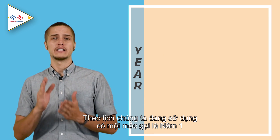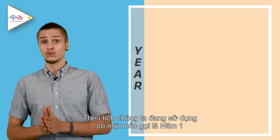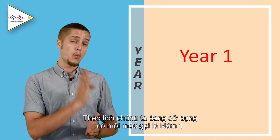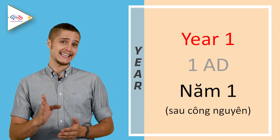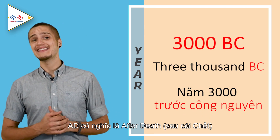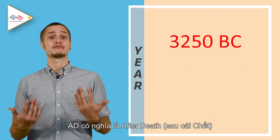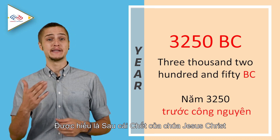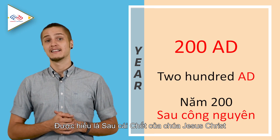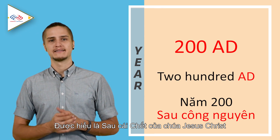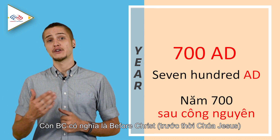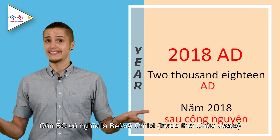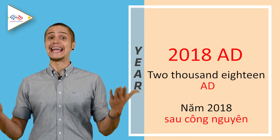Now in the calendar we use, we had a year one — 1 A.D. 3000 B.C., 3250 B.C., like 200 A.D., 700 A.D., 2018 A.D.